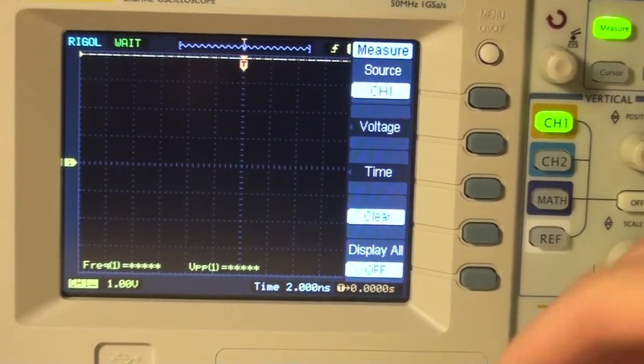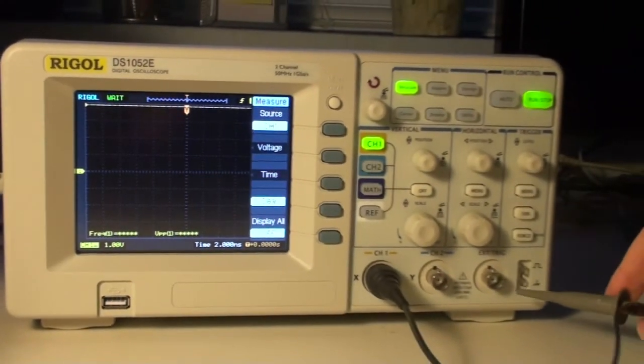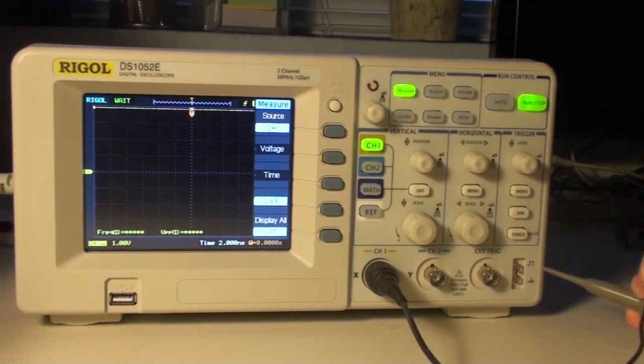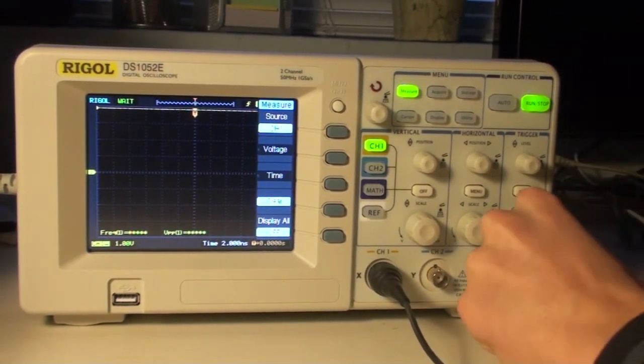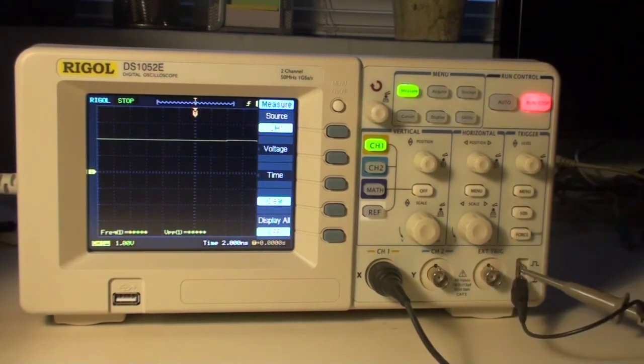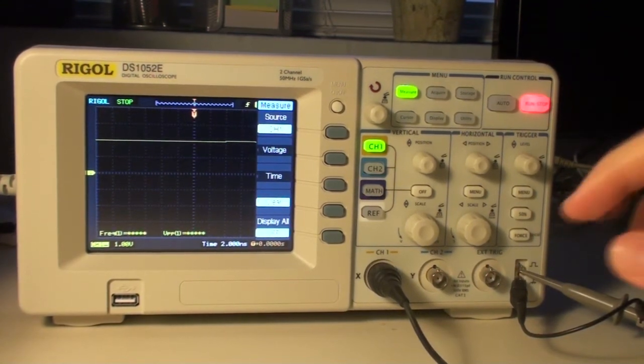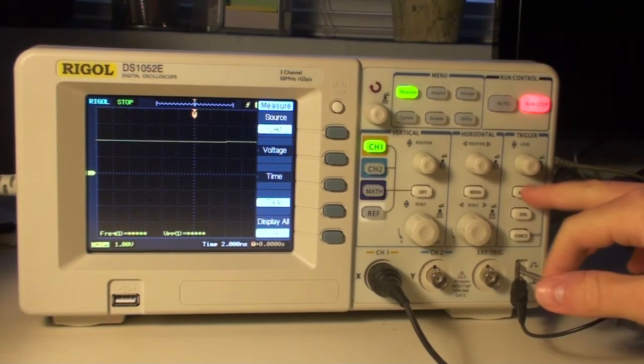So let's try to input a signal. I'll take the test signal, the probe connecting to the test signal, and then let's see what happens. Oh, now you'll notice that my scope stopped because I enabled the trigger function. I'll come back to that, I'll just reset it.